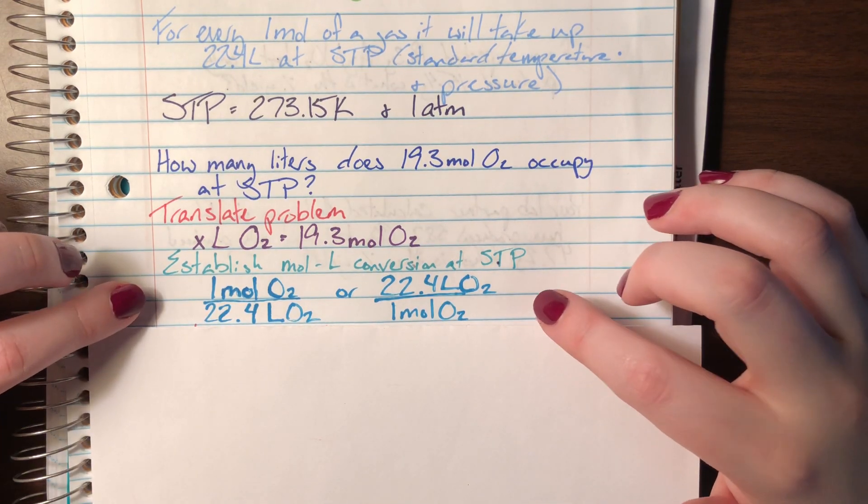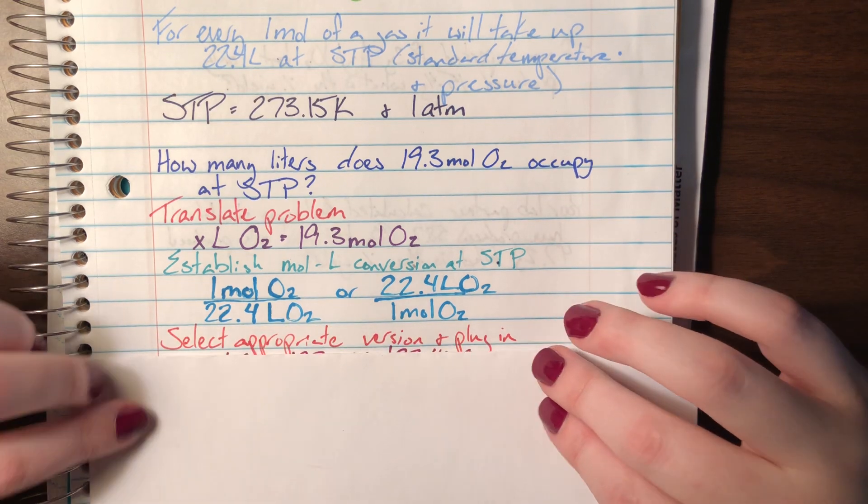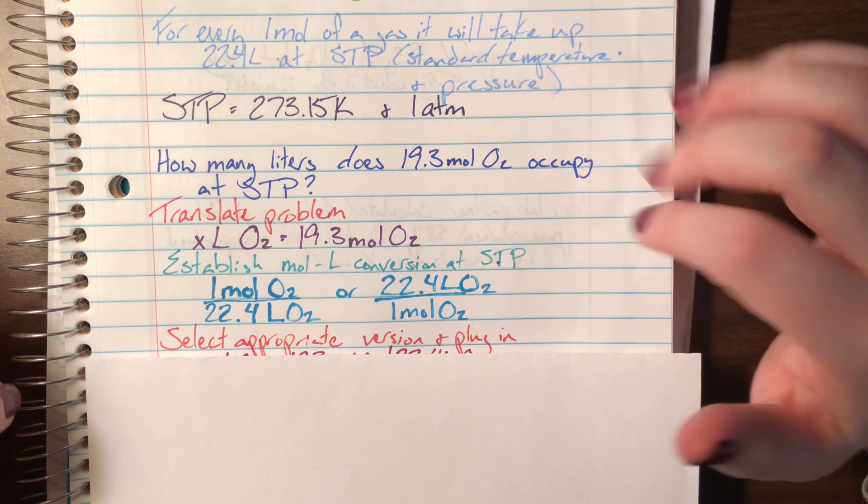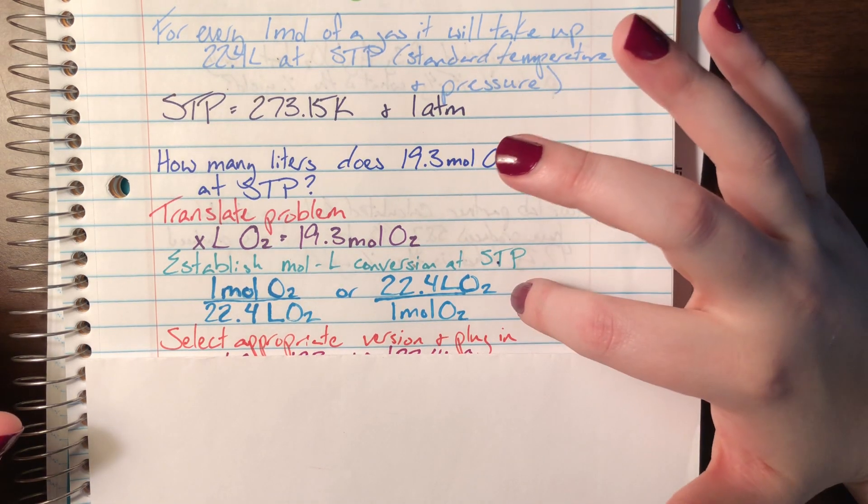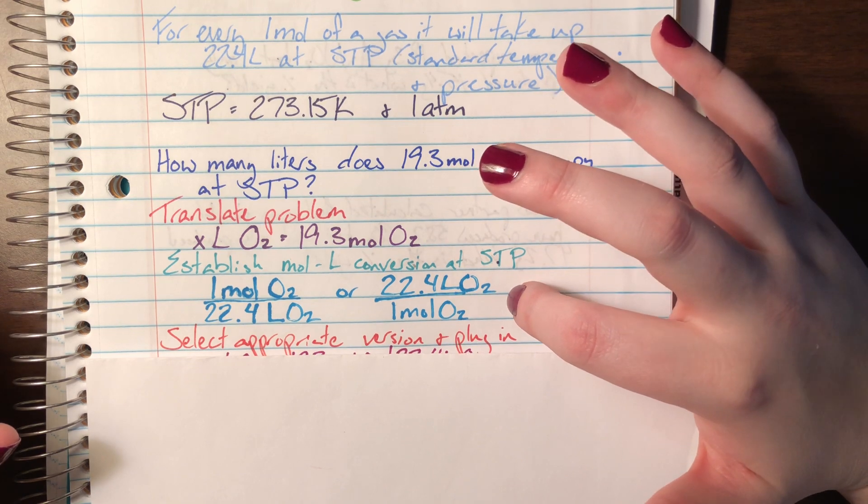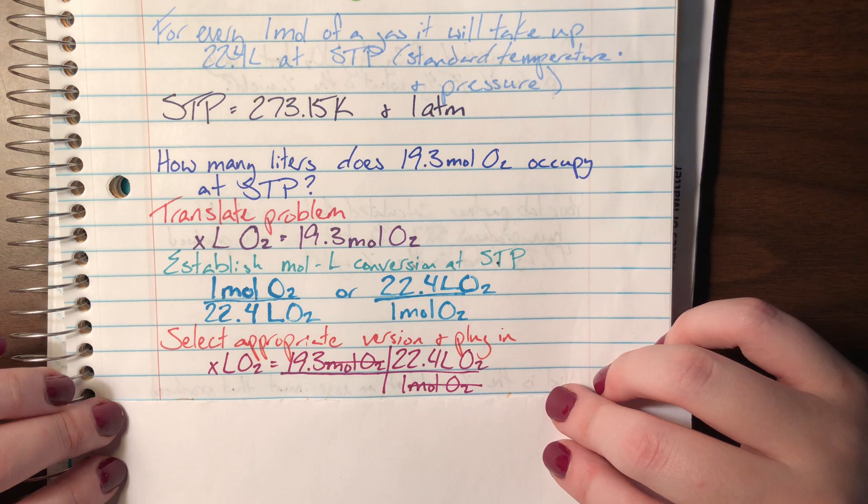Now that I have my conversion established as a usable format, I can go ahead and select my appropriate version that will allow me to cancel out moles of oxygen. I only have moles on top which means I need to choose the version of the conversion that has moles on the bottom. That's going to be this right version and I'm going to go ahead and I'm going to plug it in.